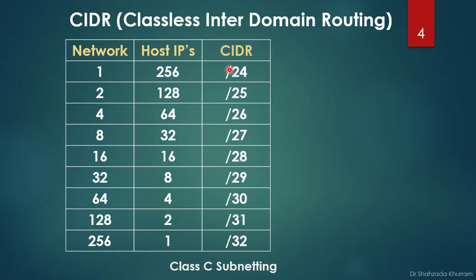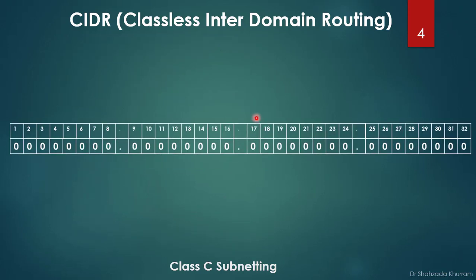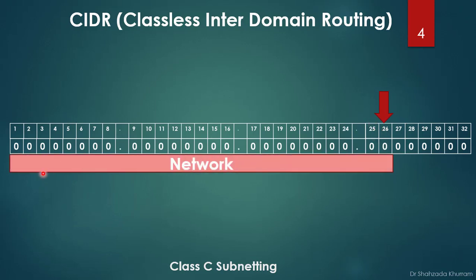We then add the CIDR column. CIDR — classless inter-domain routing — starts at /24 for the full Class C range, then /25, /26, and so on. For example, /26 means 26 bits are the network portion of the 32-bit IP address — these are fixed and cannot change. The remaining bits, from position 27 to 32, are the host portion, which we can use.